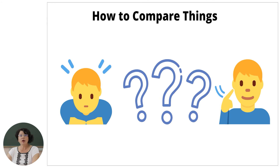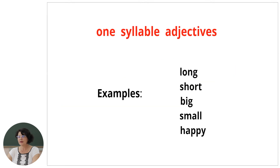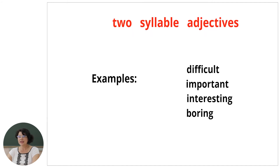Now we go to another task for today — it is how to compare things. Look at the rules. There are a lot of rules on how to compare things, but adjectives help a lot to compare things. Look at the screen and let's see the rules. We have one-syllable adjectives — for example: long, short, big, small, happy. And two-syllable adjectives — for example: difficult, important, interesting, boring.